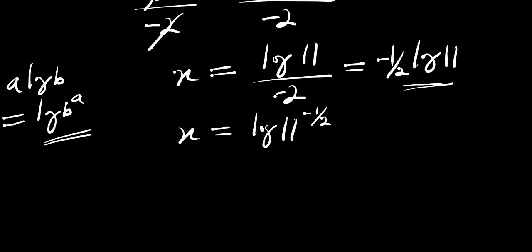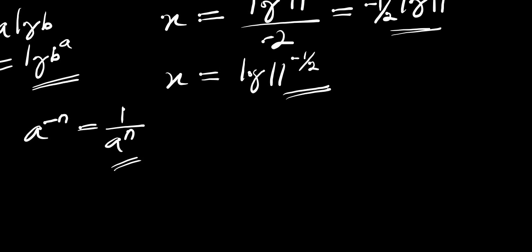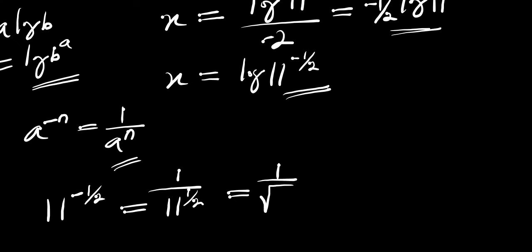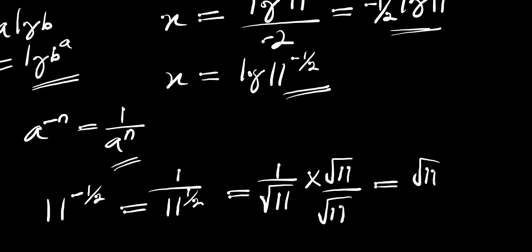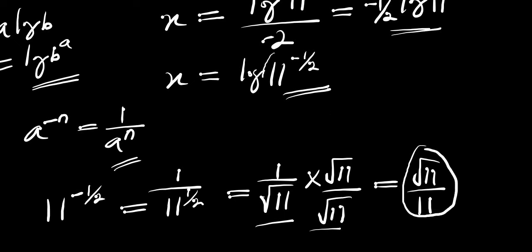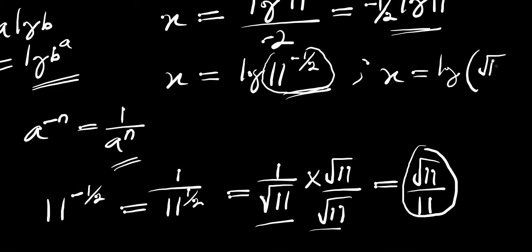Now also, if you have a to the power of negative n, this equals 1 divided by a to the power of n. So applying this identity, 11 to the power of negative 1 over 2 equals 1 divided by 11 to the power of 1 over 2, which actually equals 1 divided by the square root of 11. The next thing we are going to do is rationalize this. Multiplying by square root of 11 over square root of 11, we get square root of 11 divided by 11. So that means we are going to have x equals log of square root of 11 divided by 11.